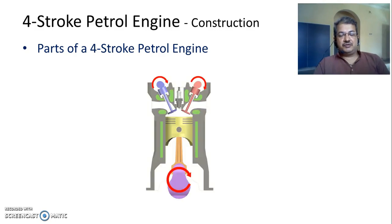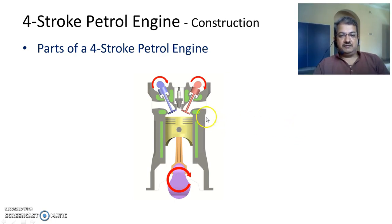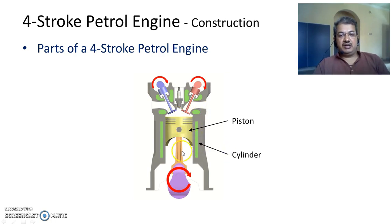First we will have to look at the various parts of this four-stroke petrol engine. What you see over here is an illustration of various parts of this engine. Basically it has a piston at the centre which is going to reciprocate inside a cylinder — it will move to and fro inside the cylinder.